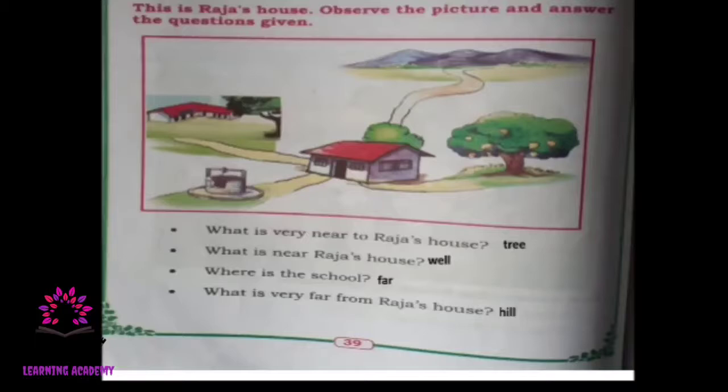What is near to Raja's house? First, what is very near — it's a tree. Next, what is near to Raja's house? It's a well. You can see right in front of the house there is a well. Where is the school? See the road — it is a little far, so the school is far from Raja's house.